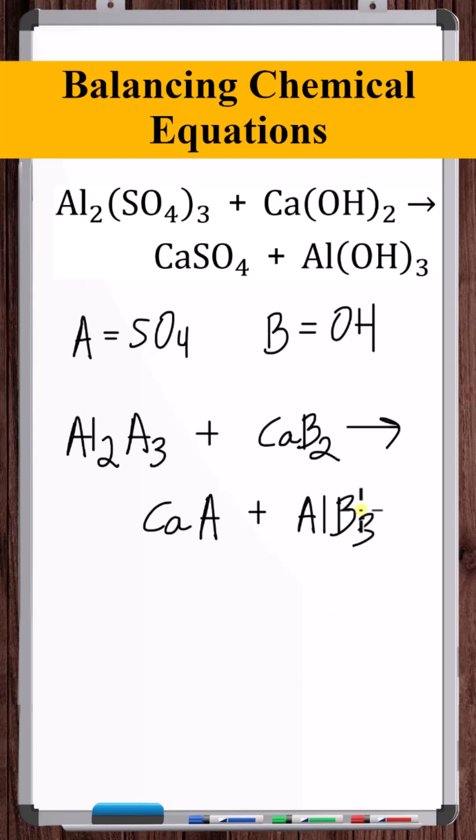Now, you might be thinking, well, don't we need to be careful? Because both of these substitutions contain oxygens. But then furthermore, what if there were oxygens outside of the SO4 and OH groups in the equation? Well, it's not a problem because we're going to balance everything in this equation. We're going to balance the A groups and the B groups. We're going to balance everything. If there were oxygens outside of the A and B groups, we would balance those as well. Okay, so let's balance this.